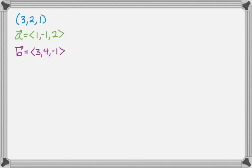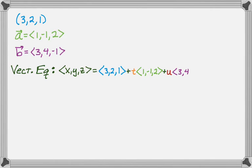So I have the point 3, 2, 1, and the vectors a and b, and first I'm going to write the vector equation. So the vector equation, which starts with x, y, z, it's going to be equal to, so I write the initial point as a vector, so 3, 2, 1, plus t times the vector a, and plus u times the vector b. So what I'm saying is, if I add any linear combination of a and b to the initial point written as a vector, I'm always going to get another point in the plane.